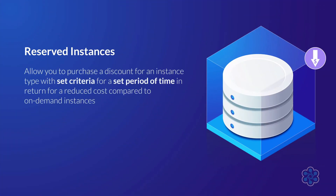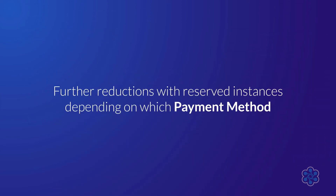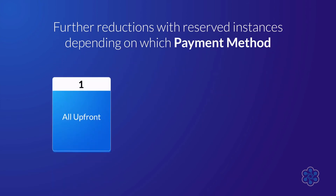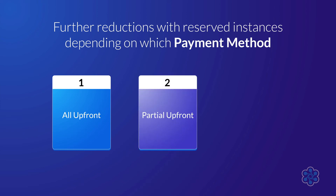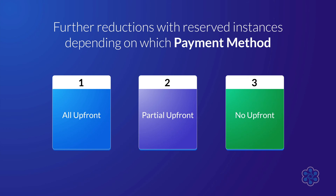Reserved instances allow you to purchase a discount for an instance type with set criteria for a set period of time in return for a reduced cost compared to on-demand instances. This reduction can be as much as 75%, and these reservations must be purchased in either one or three-year timeframes. Further reductions can be achieved depending on which payment method you select, and there are three options available. First, all upfront: the complete payment for the one or three-year reservation is paid, offering the largest discount with no further payment required. Second, partial upfront: a smaller upfront payment is made, then a discount is applied to any hours used during the term. Third, no upfront: no upfront or partial payments are made, and the smallest discount is applied to any hours used by the instance.